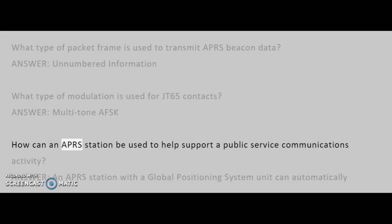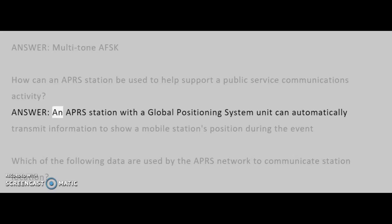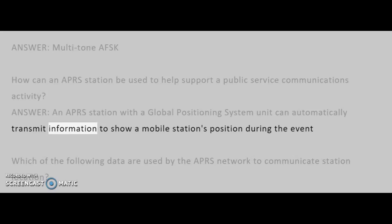How can an APRS station be used to help support a public service communications activity? Answer: An APRS station with a Global Positioning System unit can automatically transmit information to show a mobile station's position during the event.